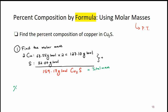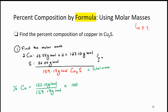Now they want to know the percent of copper. Now that you have a total mass — the molar mass of copper one sulfide is the total mass — we want the percent of copper. We already know that there is 127.10 grams of copper in one mole of copper one sulfide. So that's 127.10 over 159.17 — the amount of copper over the total molar mass — times 100, which gives us 79.85% copper.